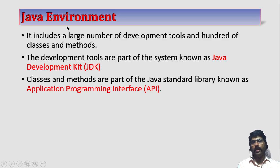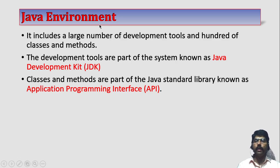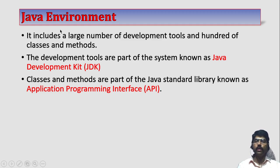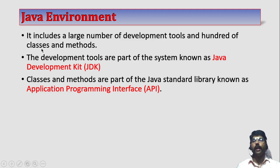Next one is the Java environment. Whenever you download any Java from the internet and install it in your computer, it comes with a large number of development tools and hundreds of classes and methods. The Java environment contains two parts: development tools and classes.